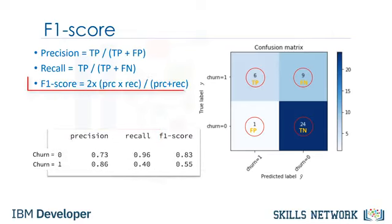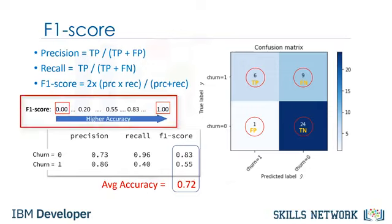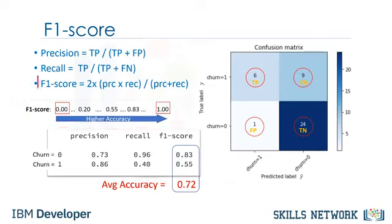The F1 score is the harmonic average of the precision and recall, where an F1 score reaches its best value at 1, which represents perfect precision and recall, and its worst at 0. It is a good way to show that a classifier has a good value for both recall and precision. It is defined using the F1 score equation.